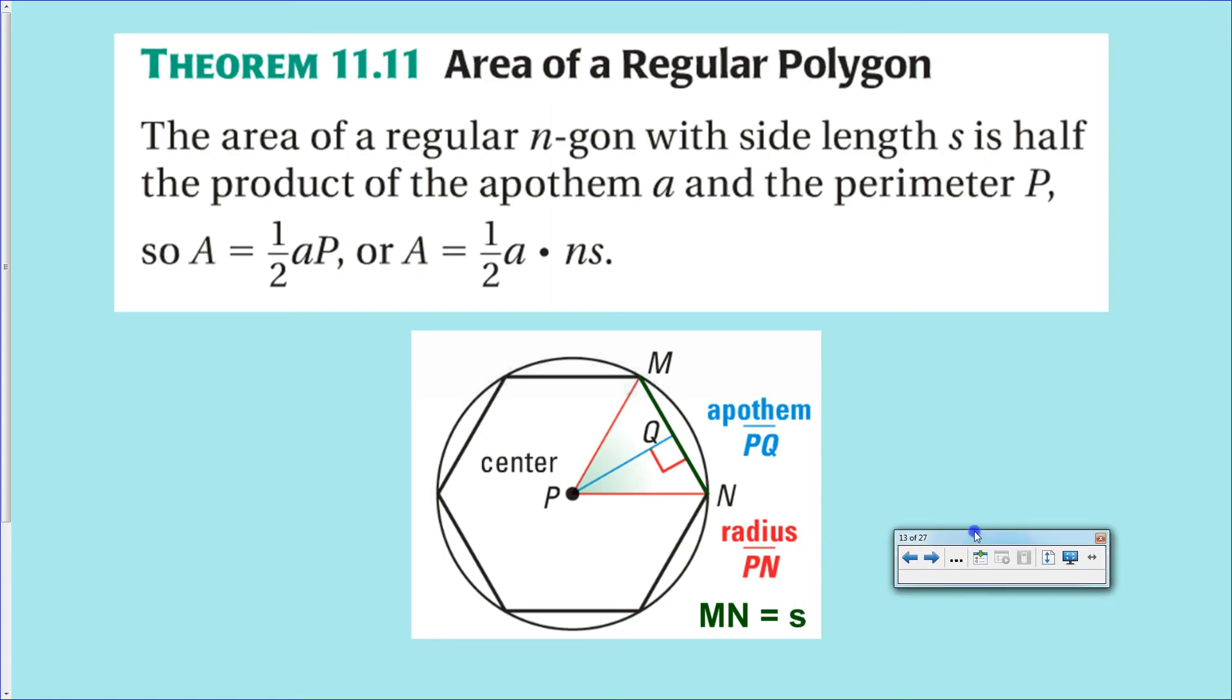And, in fact, that is the theorem for the day, 11.11, and there are two forms of it. One that breaks the perimeter into ns, the number of sides times the length of the sides, and one that just references the perimeter. So, all they really need to give you is the length of an apothem and the perimeter of the shape, and you'll be able to figure it out using that little formula right there.